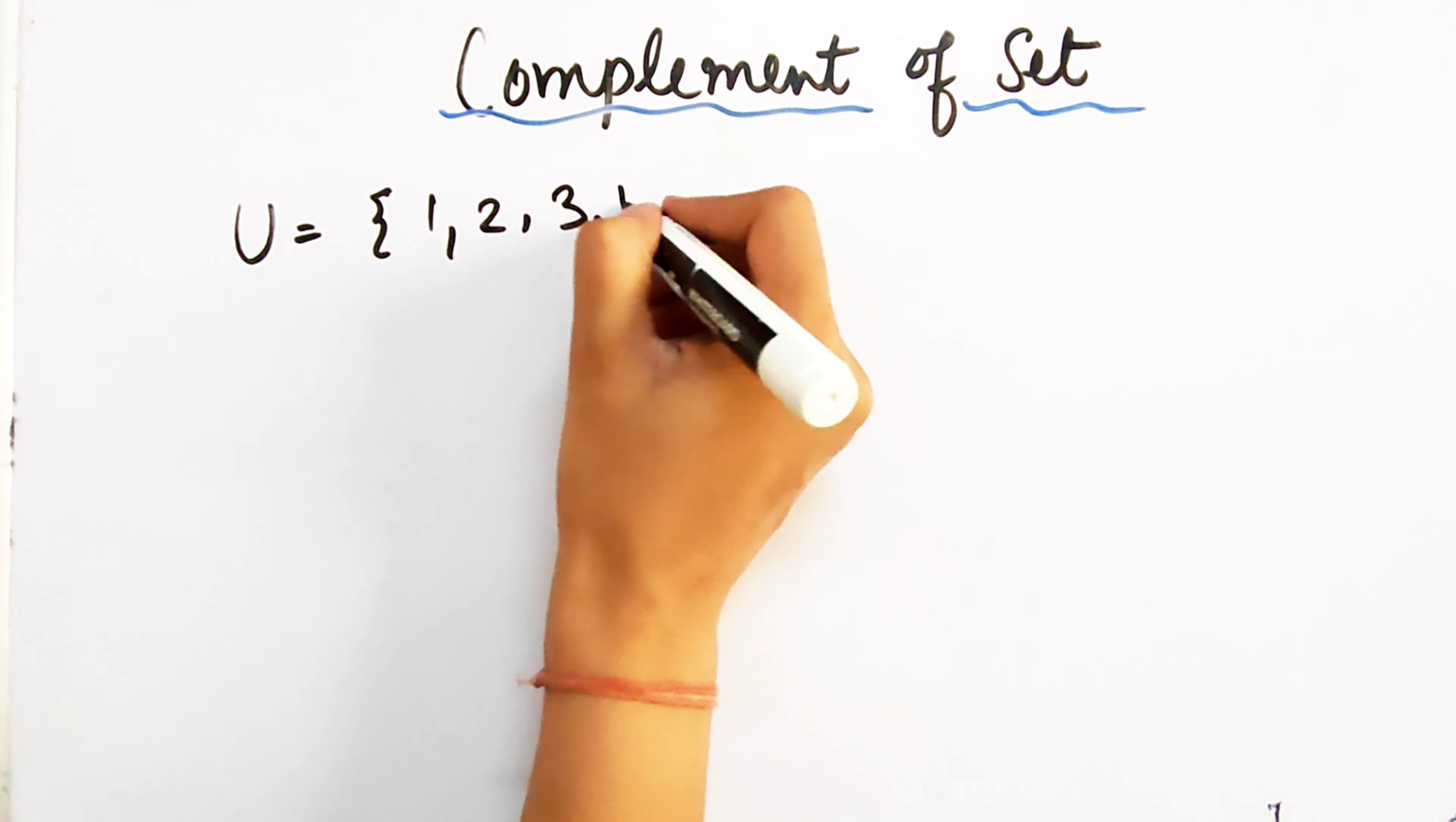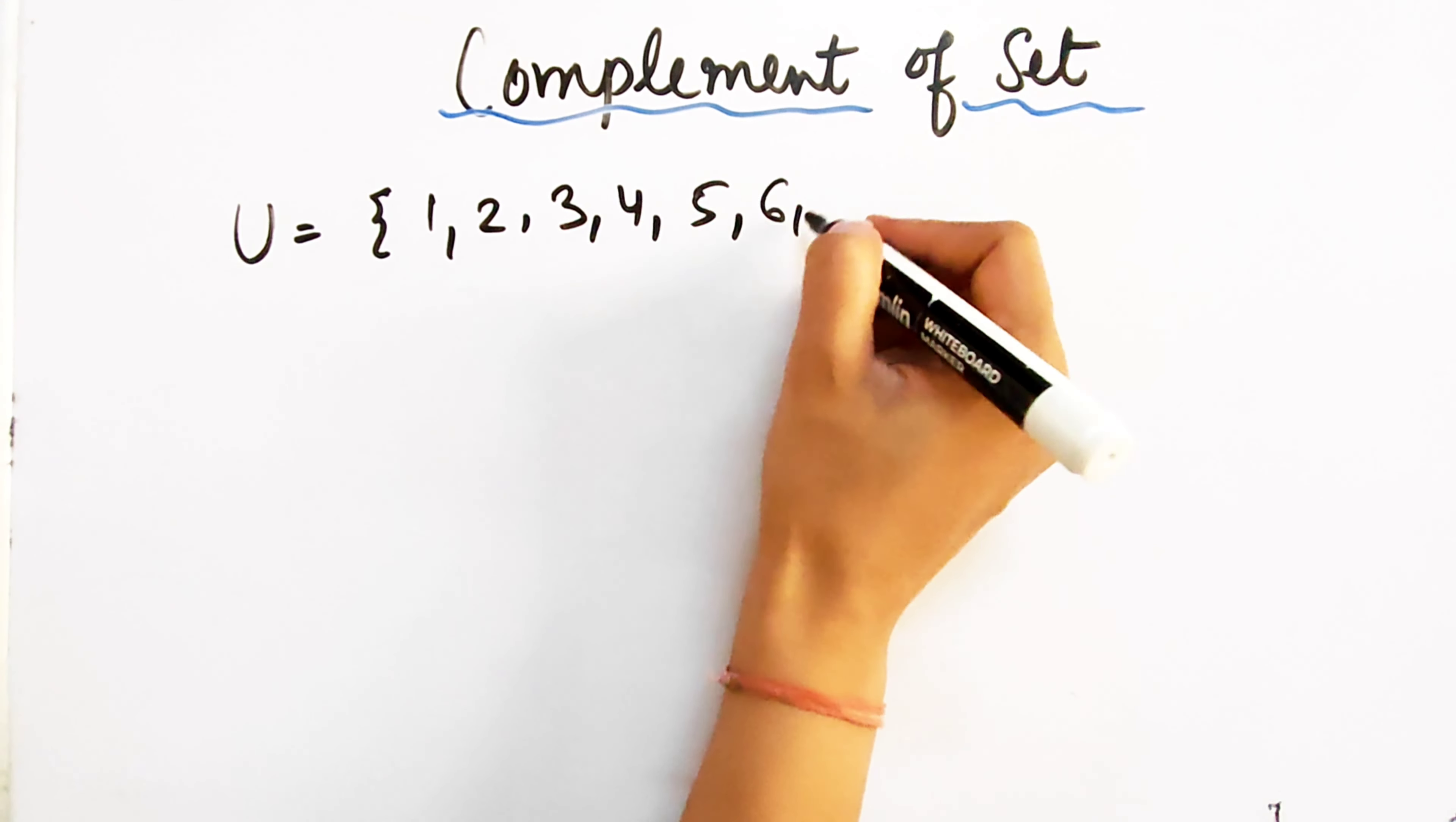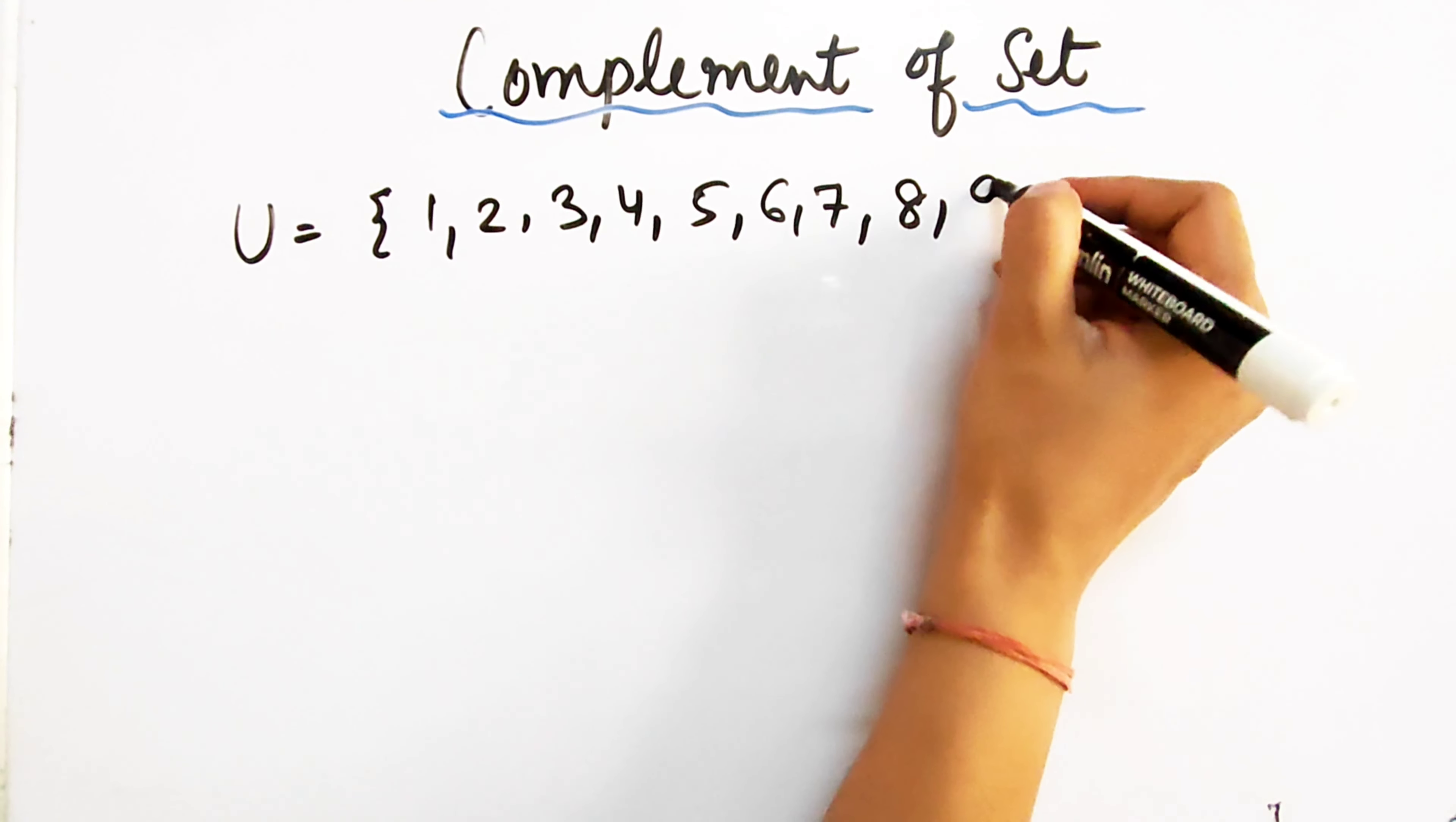Which elements are 1, 2, 3, 4, 5, 6, 7, 8, 9, 10.